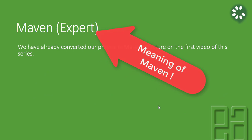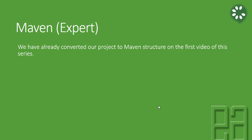We have already converted our project to Maven structure in the first video of this series. In Section 1, we converted our project to a Maven project by adding the framework, and the framework structure changed. We are going to make use of that framework structure now to perform some operations.